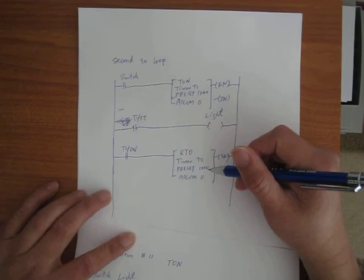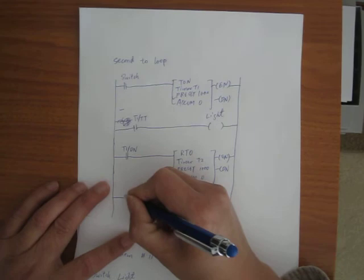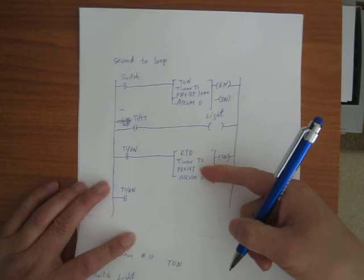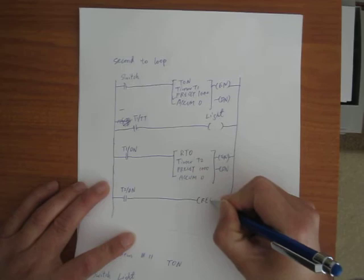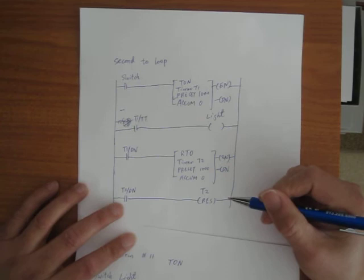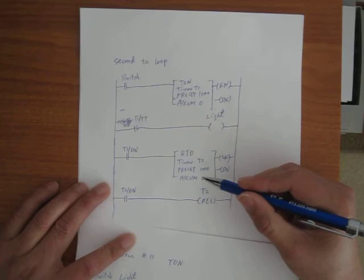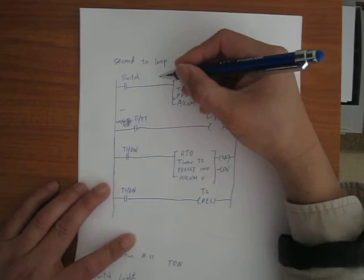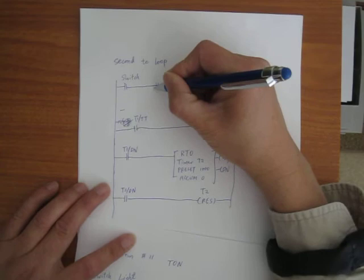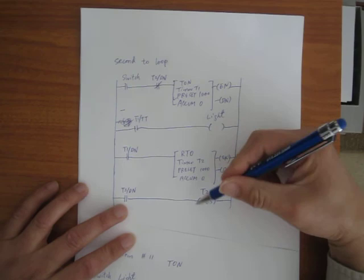After one second the RTO T2 DN becomes true. I'm going to use a reset here: when T2 DN becomes true, I'm going to reset T2. Resetting T2 resets the ACUME back to 0. So I use a reset coil for T2 — when T2 DN is true, it resets T2.